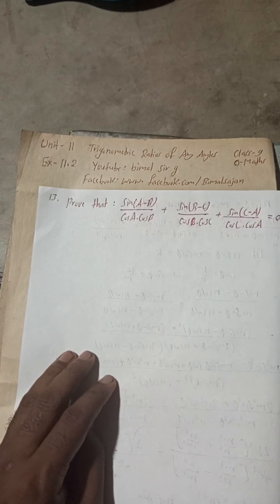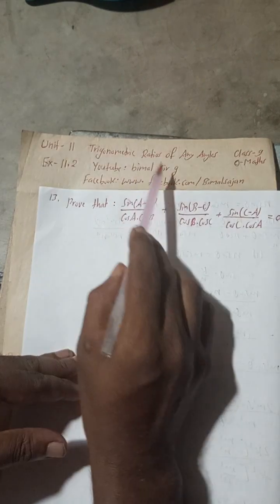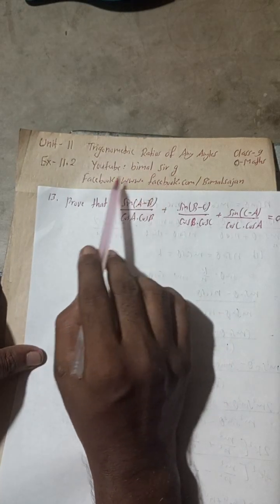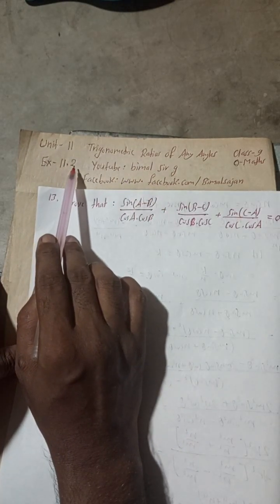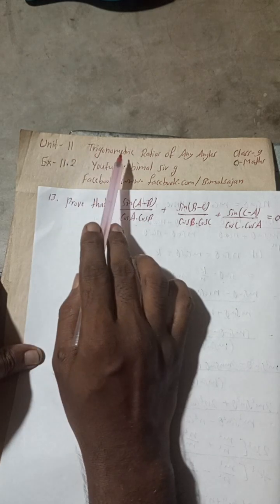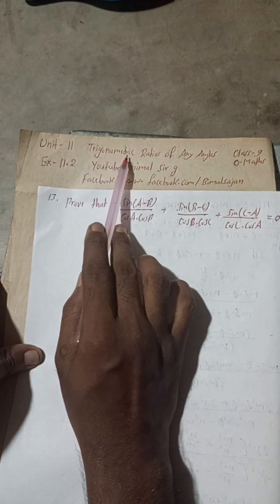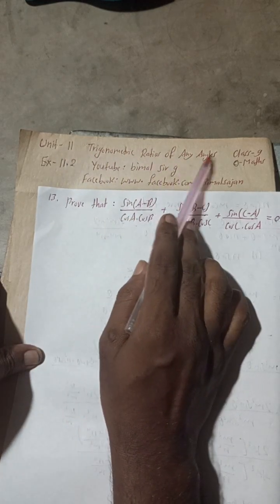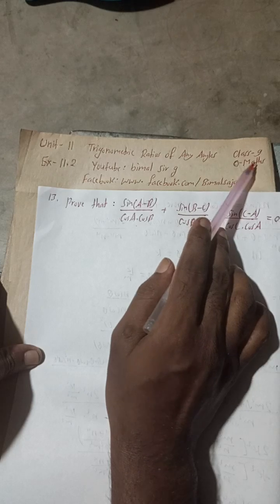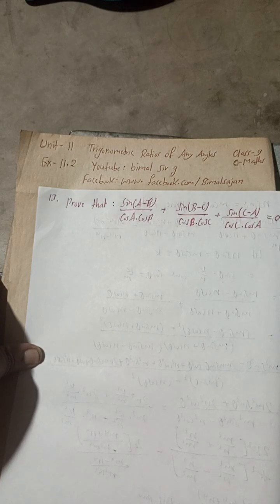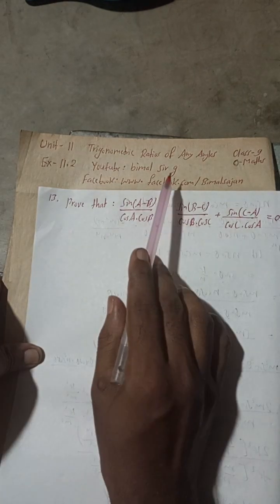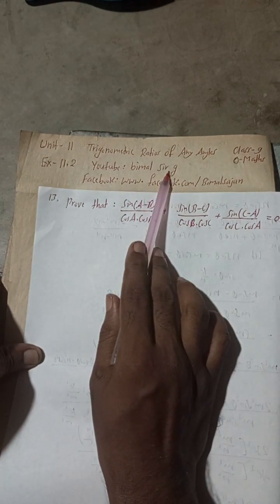Radhe Radhe, Jai Shri Krishna. Class 9 and 10 students, welcome back to Bimal Saharji's YouTube channel. This is question number 13 of Exercise 11.2, Unit 11, topic: Trigonometric Ratios of Any Angles, Class 9 Optional Maths. If you check the playlist of Bimal Saharji's YouTube channel, you will get most of your Class 9 and 10 solutions.